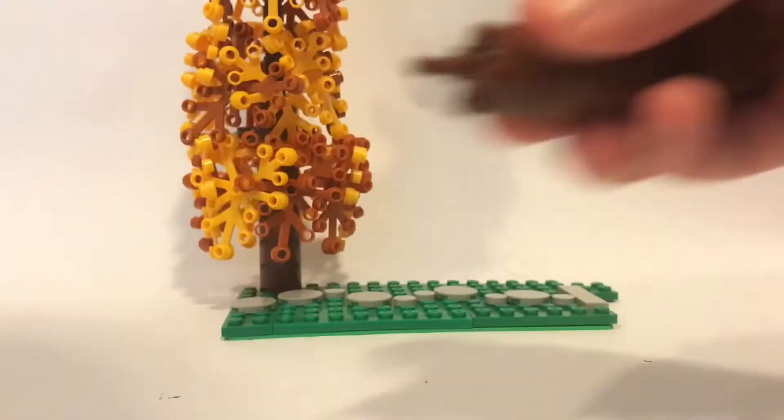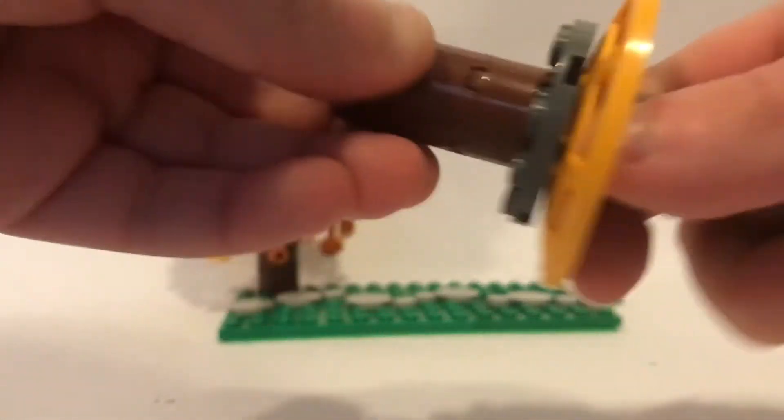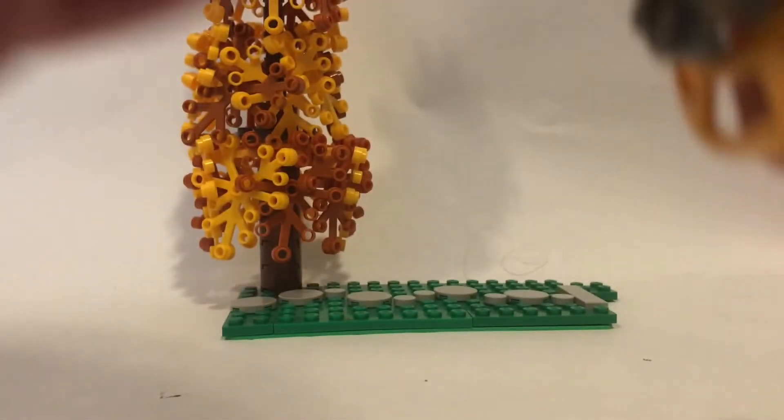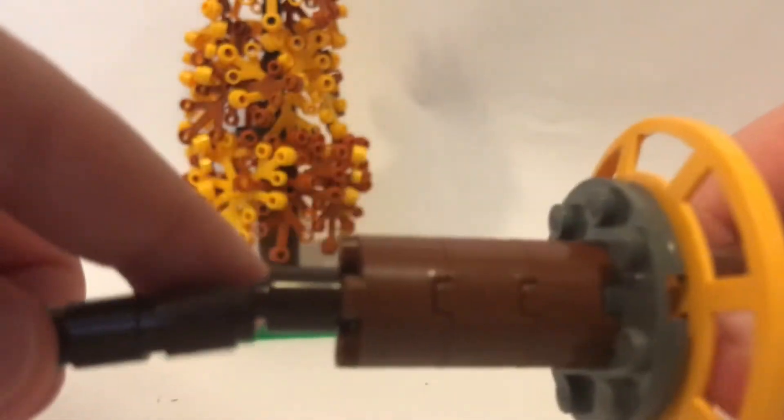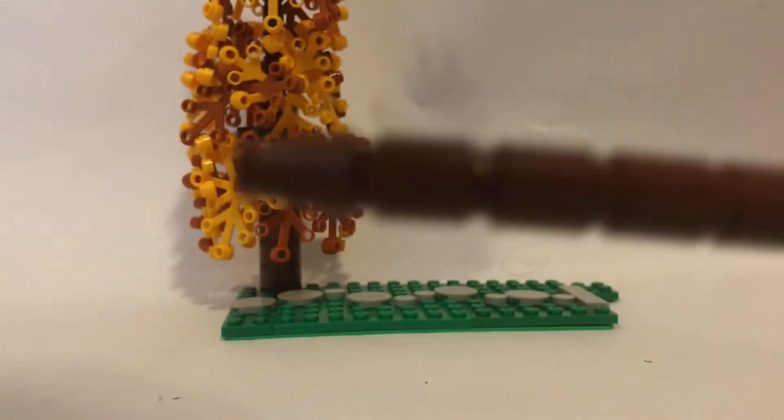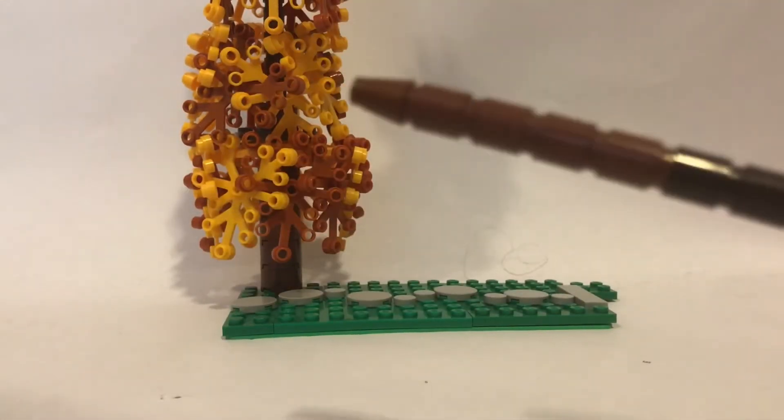We're going to take some more of these brown pieces and you can see here there's this pole going through. That makes it more strong if you want it to be strong. And now you can add these different colored brown bricks because you can't really see this through the tree. You're going to make it as tall as you want and you're going to use this tipped piece at the top.